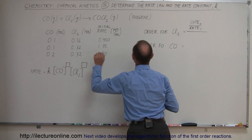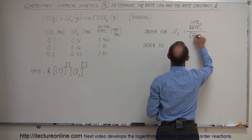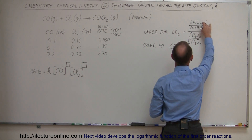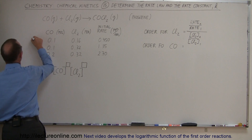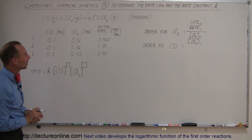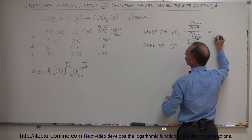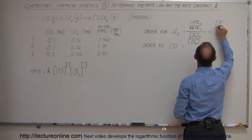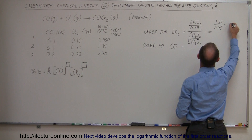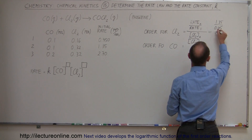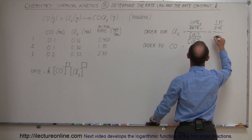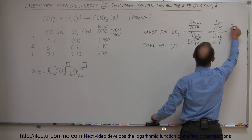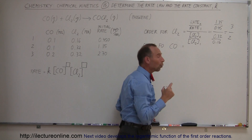We take rate 2 divided by rate 1, and divide by the ratio of the chlorine gas concentrations: Cl₂ experiment 2 divided by Cl₂ experiment 1. The rate went from 0.45 to 1.35, so the numerator is 1.35 and the denominator is 0.45. The new concentration is 0.32 and the old one was 0.16. This gives a ratio of 3 to 2, and so that would be the order for the chlorine gas.